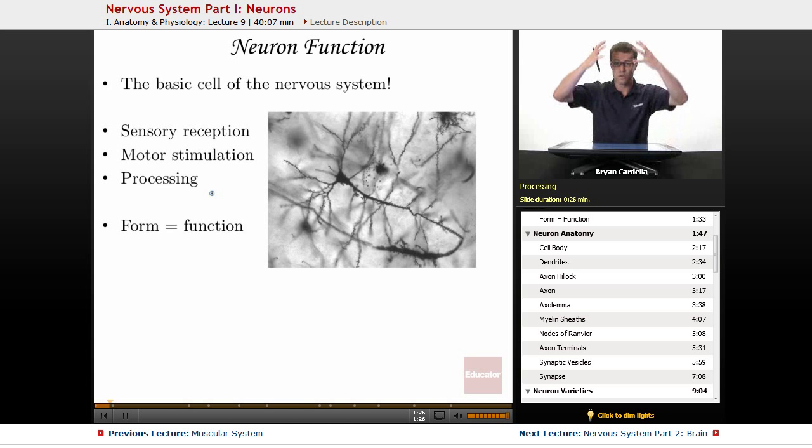In your cerebral cortex, the outside of your brain, the most superficial layer of your brain, there's a lot of processing going on. And then form equals function. This is true of pretty much any tissue in the body. Whatever it looks like, whatever form the cells take on, that corresponds to whatever function they have. You're going to see that in the next slide.